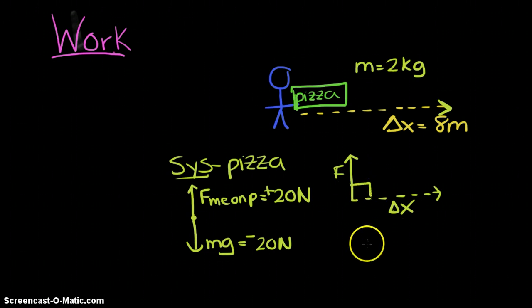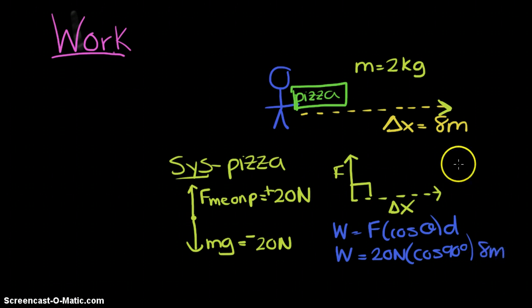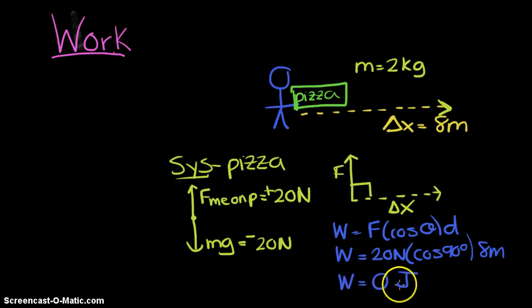Calculating work: 20 Newtons × cos(90°) × 8 meters. 20 × 8 = 160 Newton·meters, but cosine of 90° is zero, making the work zero joules.